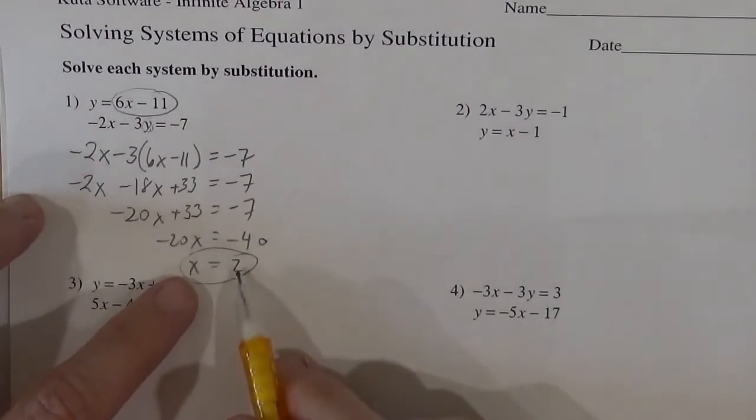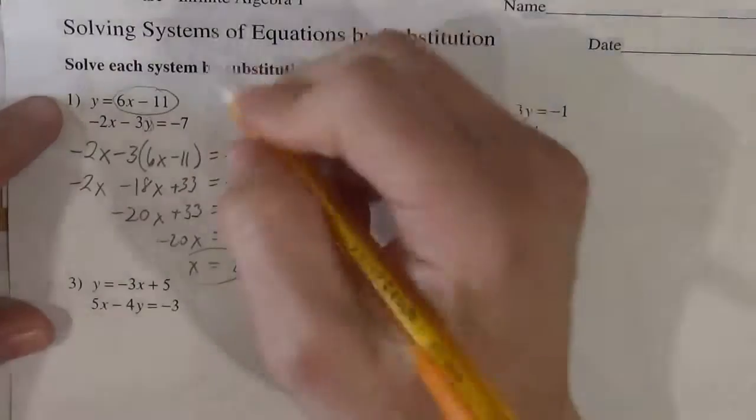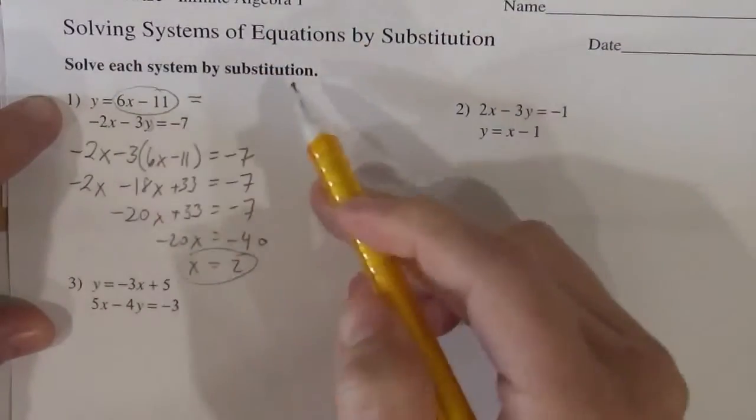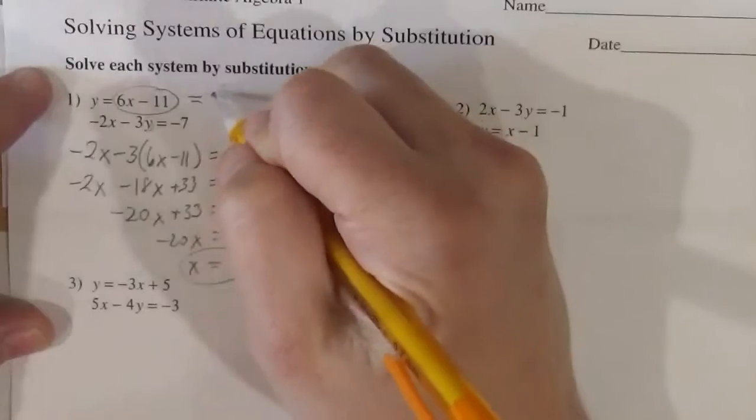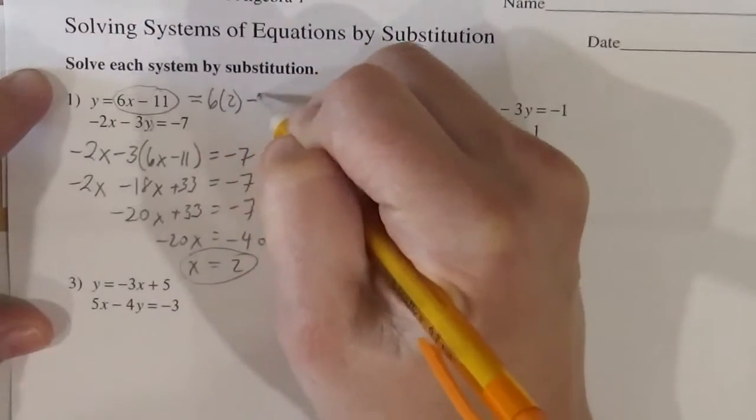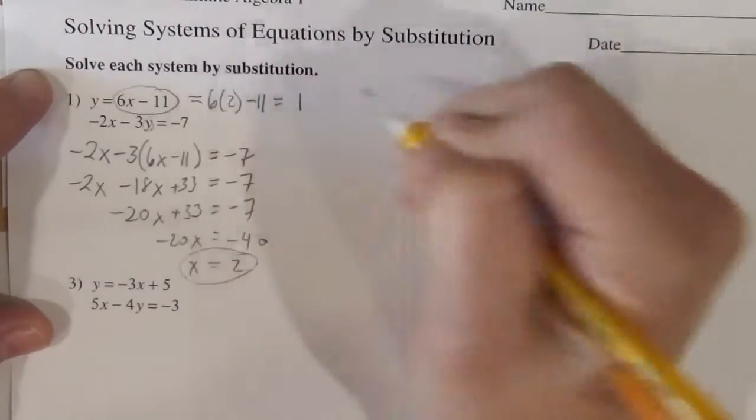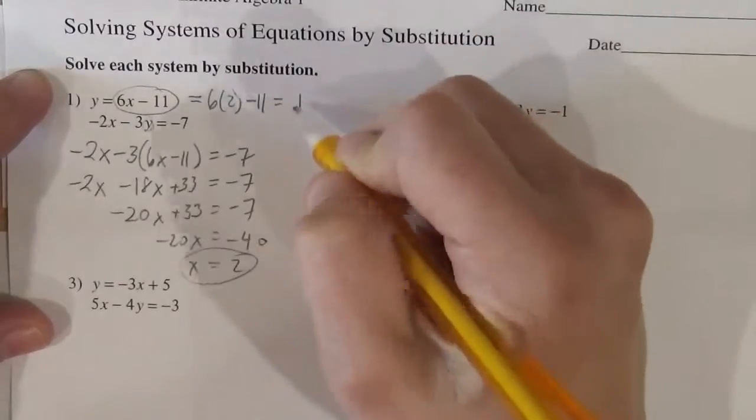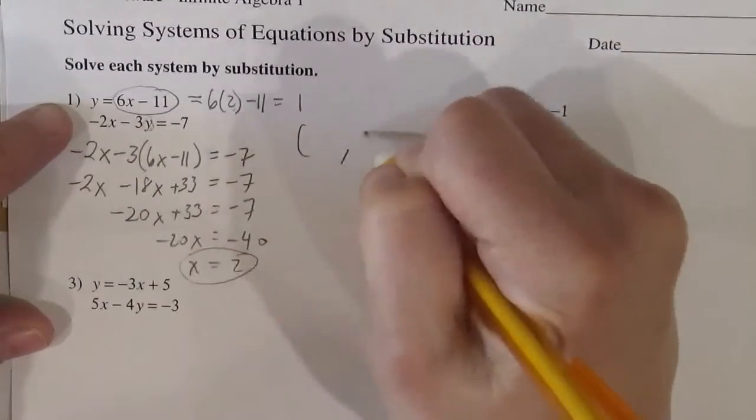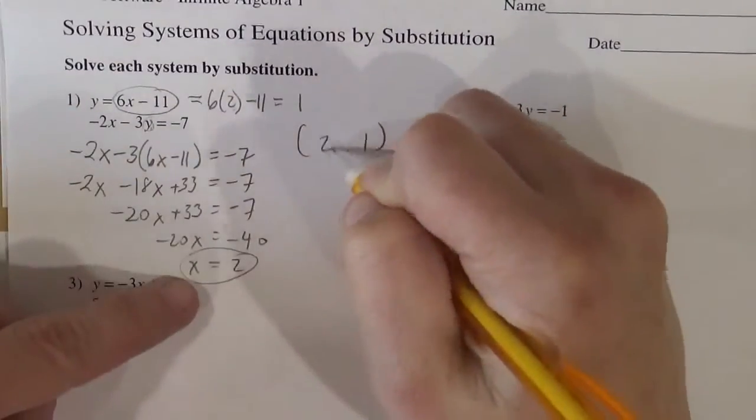And so, well that's great, but what was y? Well, y equals 6x minus 11. So just plug this back into that, 6 times 2 minus 11, so 12 minus 11 is 1. So the y is 1, and the x is 2.